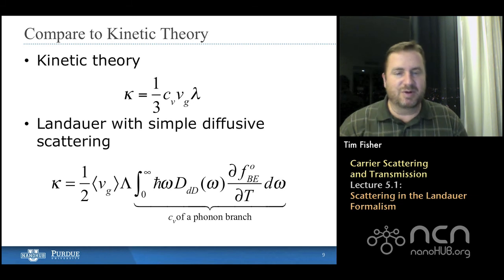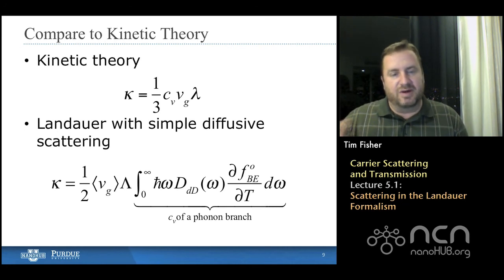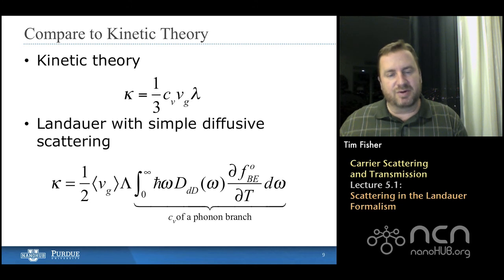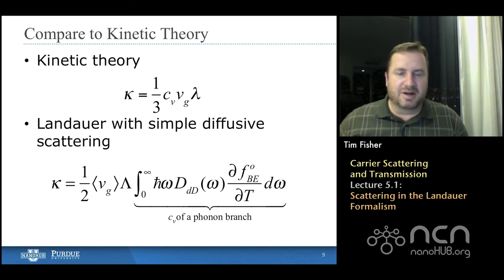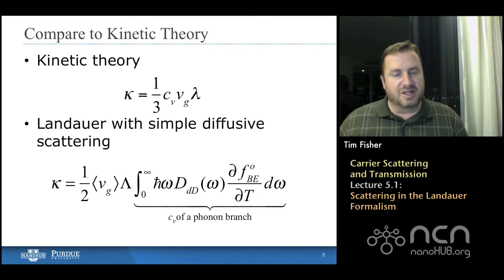I've simply rewritten this in the Landauer form, which is, again, with the approximation of simple diffusive scattering. We find that, again, those terms show up here. And the factors of, we have a one-third multiplying the group velocity. Here we have, in the kinetic theory, then we have one-half times the average of the group velocity.